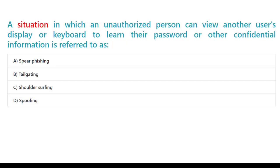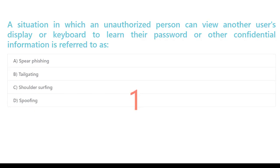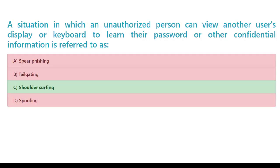A situation in which an unauthorized person can view another user's display or keyboard to learn their password or other confidential information is referred to as: A. Spear phishing. B. Tailgating. C. Shoulder surfing. D. Spoofing. The correct answer is C. Shoulder surfing.